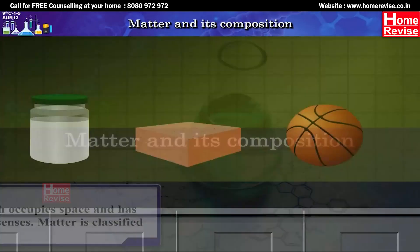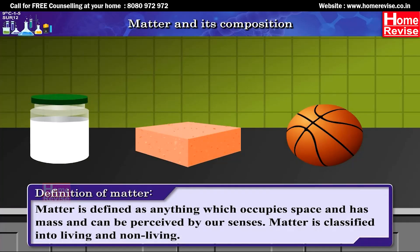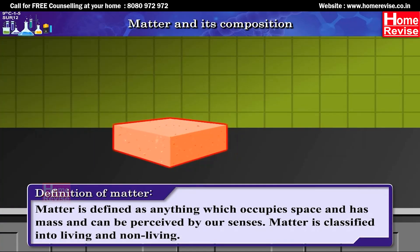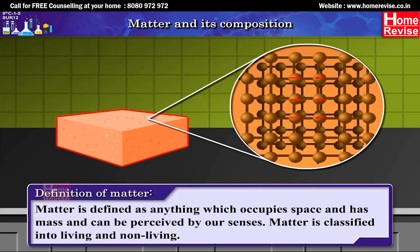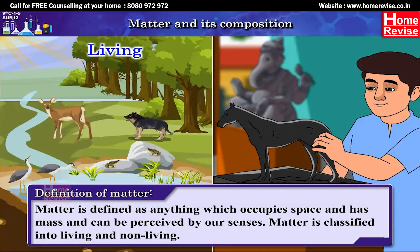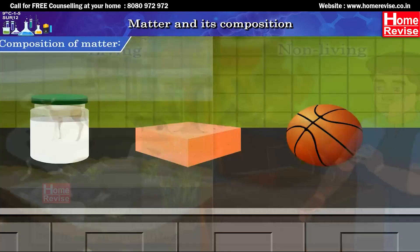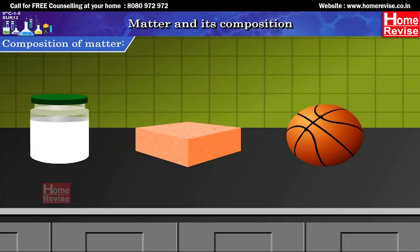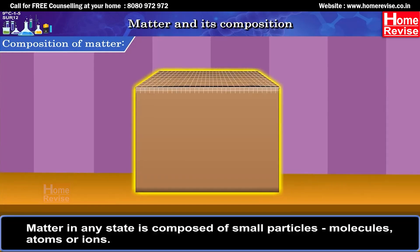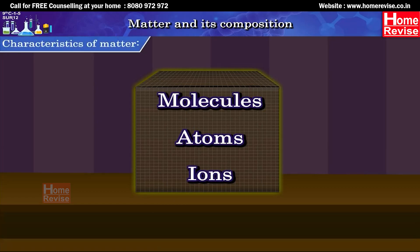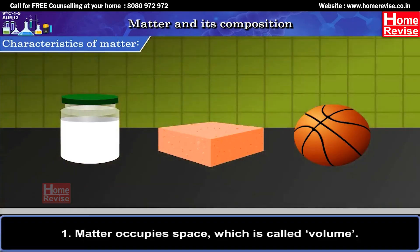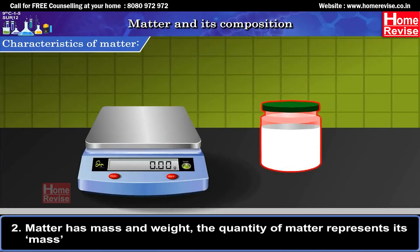Matter and its Composition. Definition of Matter: Matter is defined as anything which occupies space and has mass and can be perceived by our senses. Matter is classified into living and non-living. Characteristics of Matter: 1. Matter occupies space, which is called volume. 2. Matter has mass and weight.